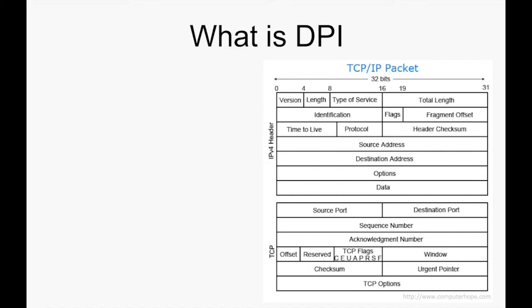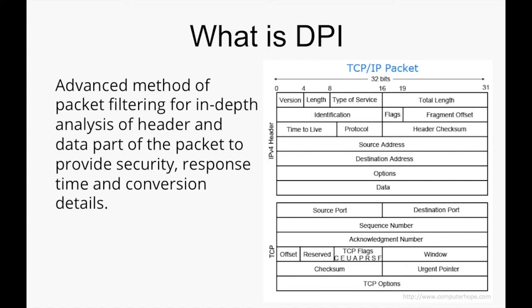Deep Packet Inspection is an advanced filtering mechanism which can analyze any TCP/IP packet in depth. Both the header and the data packet of a TCP/IP packet can be analyzed in detail using DPI, which provides detailed information on network bandwidth utilization and also helps you to detect security-related issues as well.